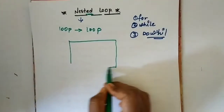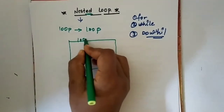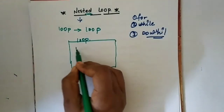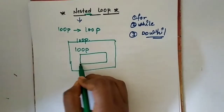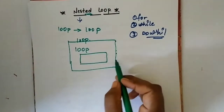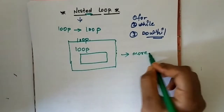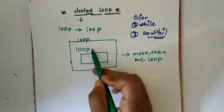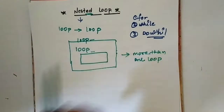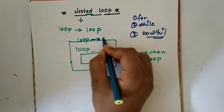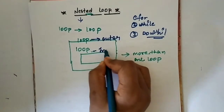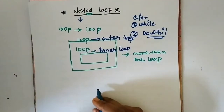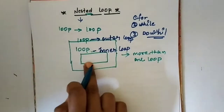Suppose this is our first loop — this is the boundary of the first loop. Inside the first loop we contain another loop, which is the second loop. So this is called a nested loop — more than one loop. In this diagram there are two loops: this is the first and this is the second. This one is called the outer loop and this one is the inner loop. So this is called a nested loop.